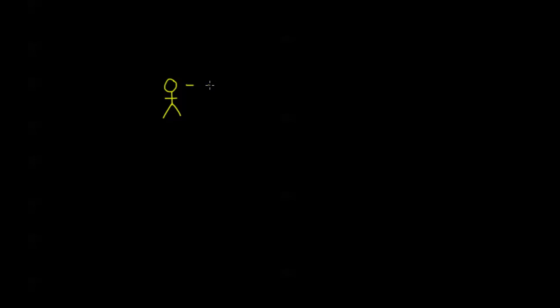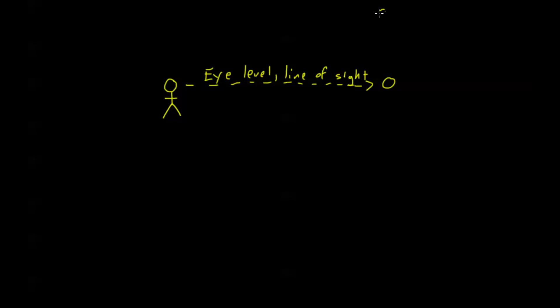Let's say we have a person in a word problem looking straight at an object. We call this straight line eye level or line of sight. Now if they're looking up at the sun or some object up in the sky, we call the angle between eye level and the line going directly to the object the angle of elevation. Elevation is the key word, and a lot of word problems use angle of elevation.